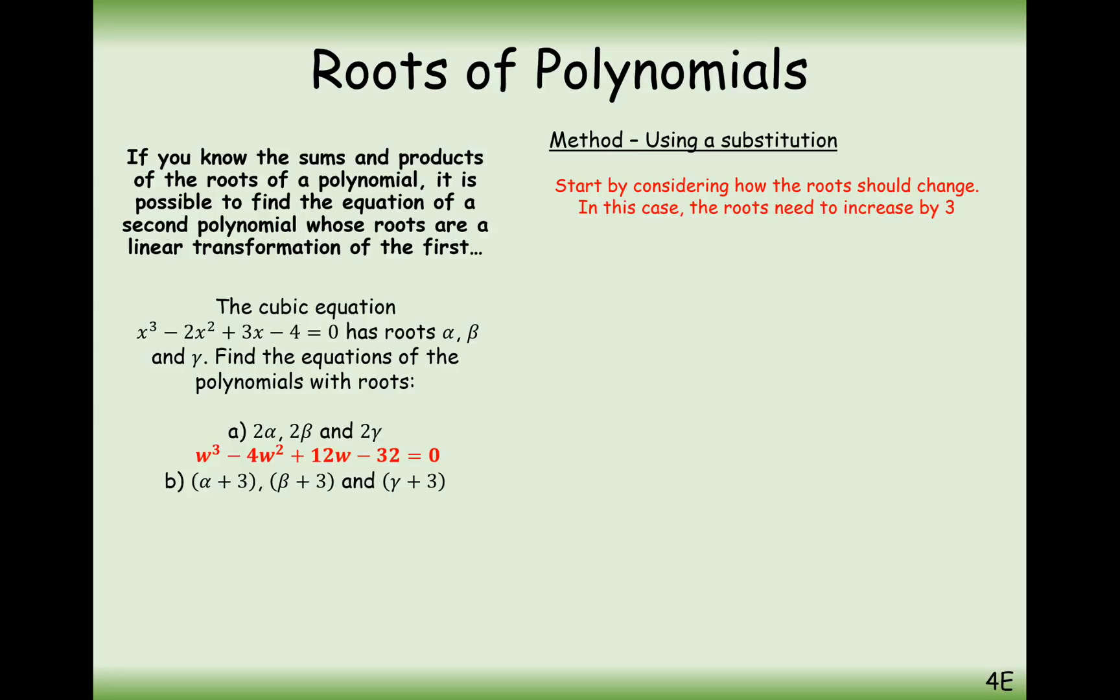In this case here, what equation do we need to set up initially? Well, the new roots, w, w is effectively the list of new roots, is equal to the old roots, add on 3. Alpha, beta, gamma, add on 3 gives us our new roots of alpha plus 3, beta plus 3, and gamma plus 3. Rearrange this. So w minus 3 equals x.